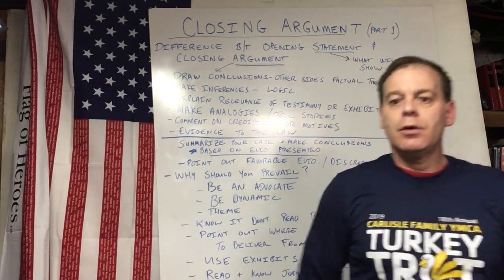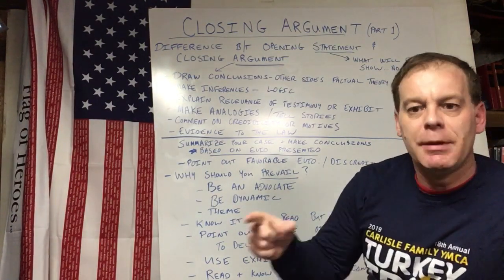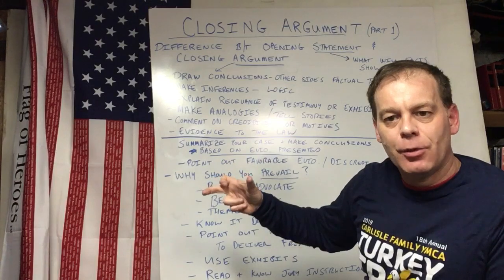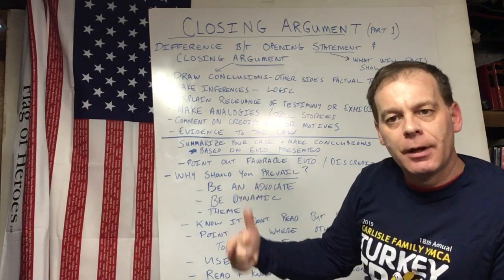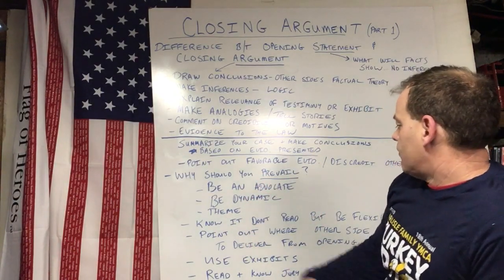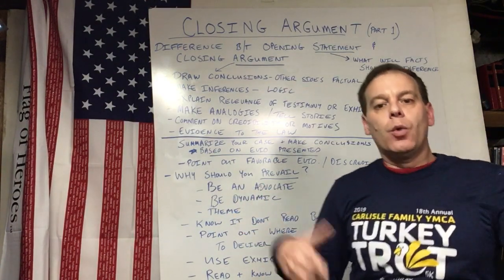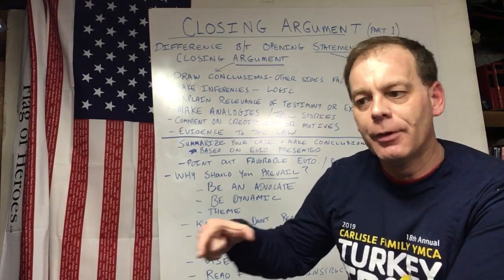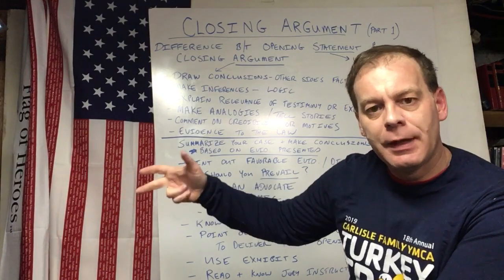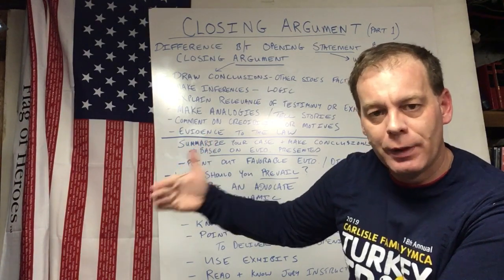You need to know your closing argument, but don't read it — be flexible. You can only present evidence that comes out during the trial, so be ready. We'll talk in video two about how to prepare your closing argument and how to be flexible. You also want to point out where the other side failed to deliver. Going back to the opening statement — where did the other side fail to deliver on their promises? You want to bring that up: 'Ladies and gentlemen, you remember the prosecution said they were going to do X, Y, and Z. They only did X and Y. They promised you they were going to give you Z and they didn't.' Point that out.